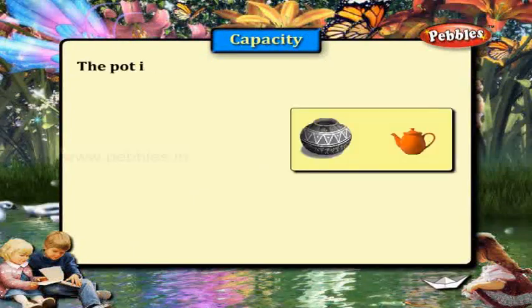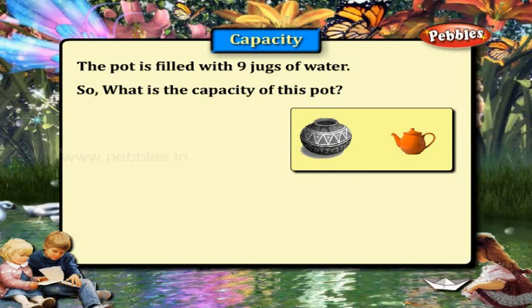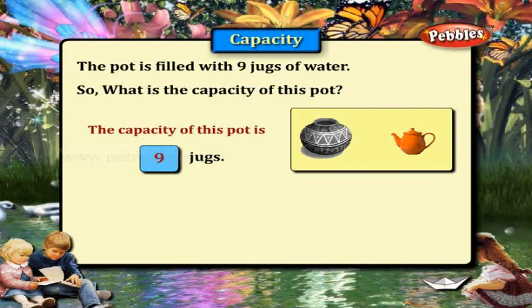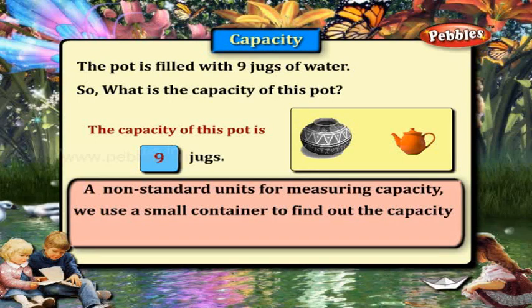The pot is filled with 9 jugs of water. So, what is the capacity of this pot? The capacity of this pot is 9 jugs. In non-standard units for measuring capacity, we use a small container to find out the capacity of a big container.